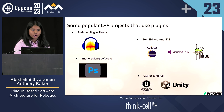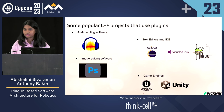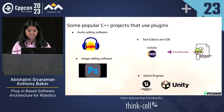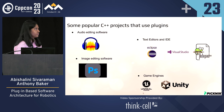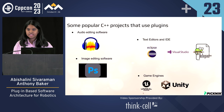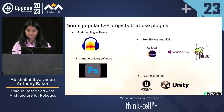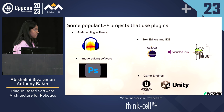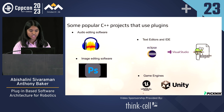Here are some popular C++ projects that use plugins — examples outside the robotics domain. Audio editing software like Audacity, text editors and IDEs like Eclipse and Visual Studio, image editing software like Photoshop, and game engines like Unreal and Unity all use plugins.